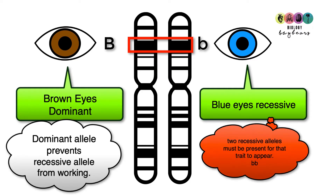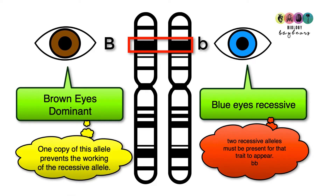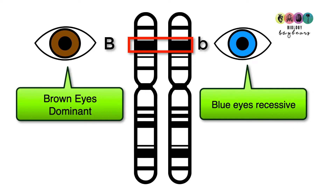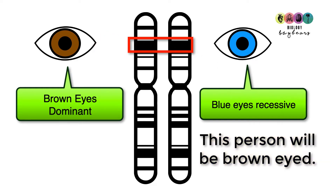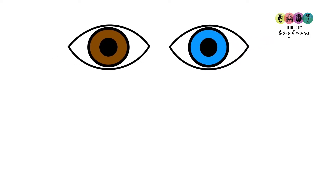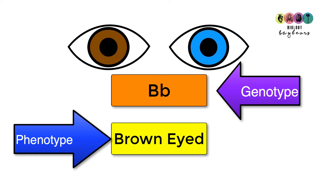If you have one version of the dominant allele it will prevent the working of the recessive allele. So in this case, the allele coding for brown eyes prevents the working of the recessive allele for blue eyes. Rather than drawing chromosome diagrams every time, we use letters. We pick the dominant trait — brown eyes — and use B. Capital B means brown and small b means blue, though even green eyes would still use small b. Together, big B and little b represent the genotype — the mix of alleles this individual has — and the phenotype, the physical makeup, is brown eyed.